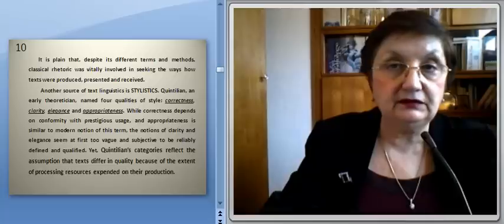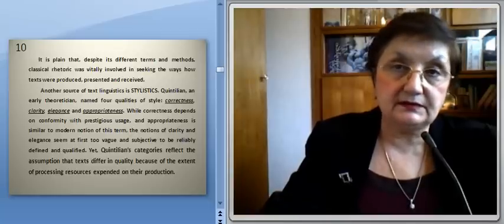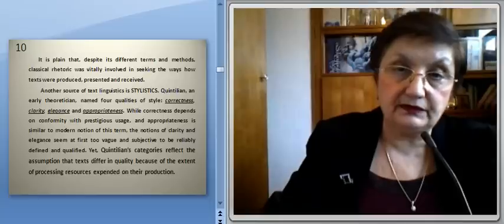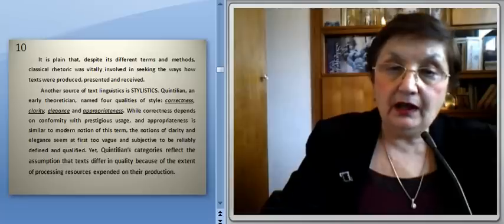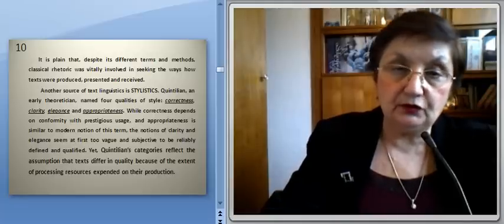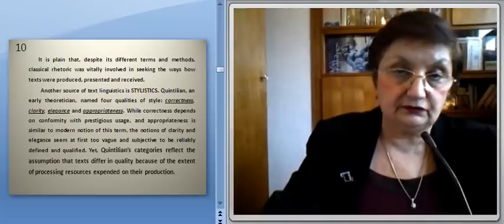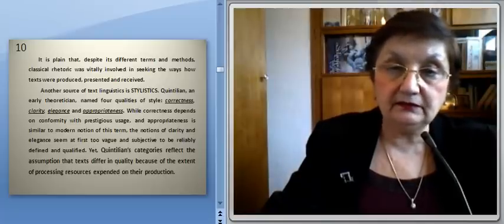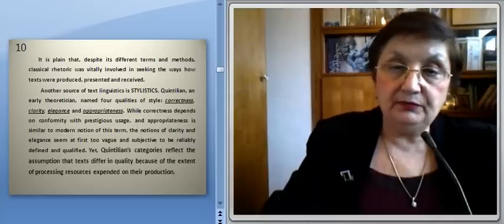Another source of text linguistics is stylistics. Quintilian, an early rhetorician, named four qualities of style: correctness, clarity, elegance, and appropriateness. While correctness depends on conformity with prestigious usage, and appropriateness is similar to its modern understanding, the notions of clarity and elegance seem at first too vague and subjective to be reliably defined and qualified. Yet Quintilian's categories reflect the assumption that texts differ in quality because of the extent of processing resources expended on their production.